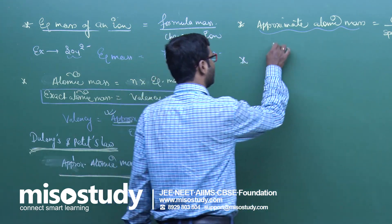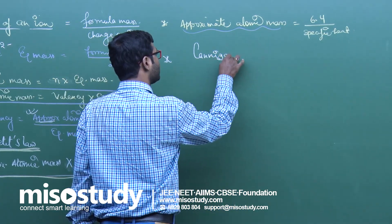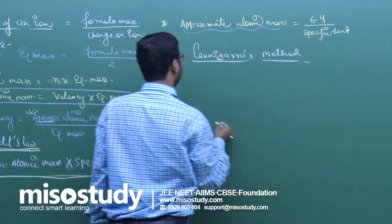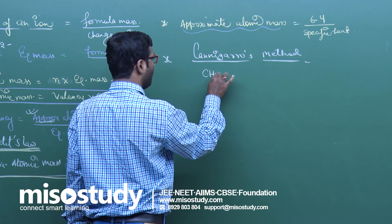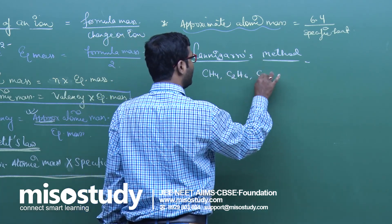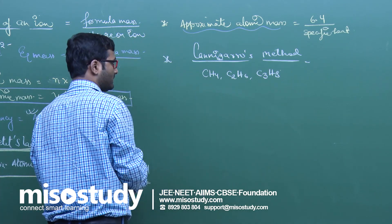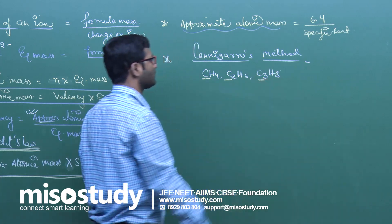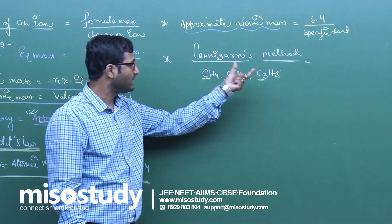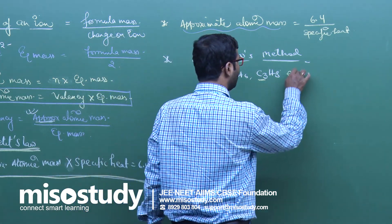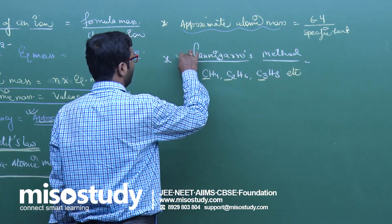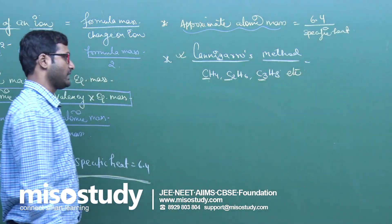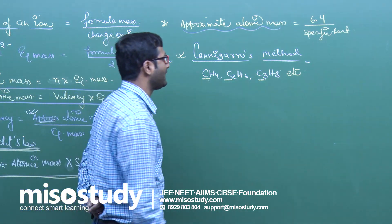The next method is Cannizzaro's method. If we consider compounds like CH4, C2S6, or any hydrocarbon, the lowest value of atomic mass we get from all these compounds will be the atomic mass of that particular atom — in this case, carbon. This can be done by using Cannizzaro's method.